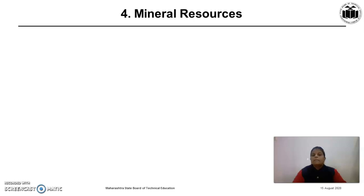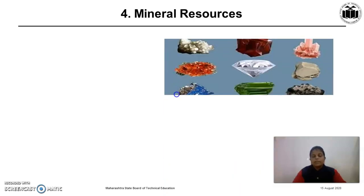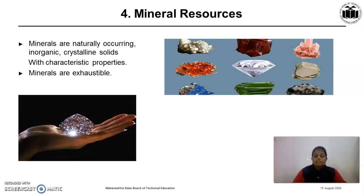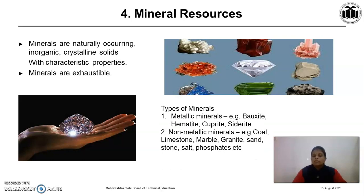The next type of resources is mineral resources. Minerals are naturally occurring inorganic crystalline solids with characteristic properties. These minerals are exhaustible — if we don't use them carefully, a day will come when there are no minerals left on earth. There are two types of minerals: metallic minerals and non-metallic minerals. Examples of metallic minerals: bauxite, from which we get aluminium; hematite, from which we get iron; and cuprite, siderite, and many more.